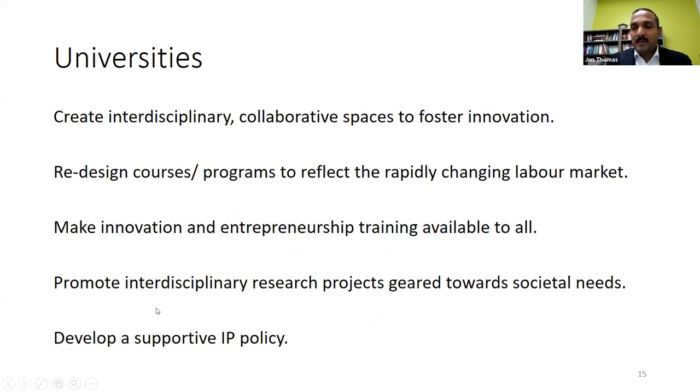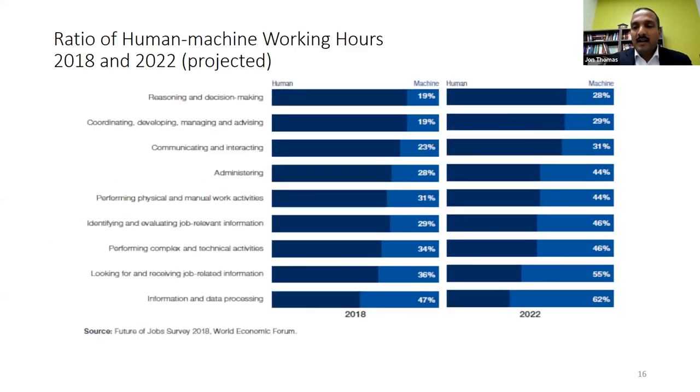How can each of these stakeholders play a role to build and strengthen an ecosystem? Universities can create interdisciplinary collaborative spaces to foster innovation and UFV is doing that. Universities can redesign courses, programs to reflect rapidly changing labor markets. Universities can make innovation and entrepreneurship training more open, more accessible. They can promote research projects that are geared towards societal needs. They can develop supportive IP policies which allow the ideas that are generated in a university to move forward to raise financing. And why are universities so important? An aspect of technology development is also that it has impacts on the labor market. And hence, there is a need for reskilling.